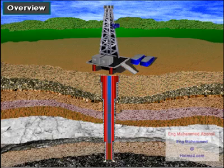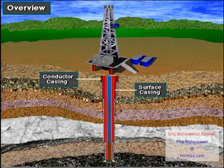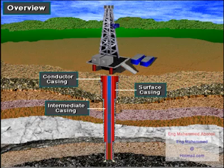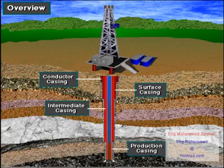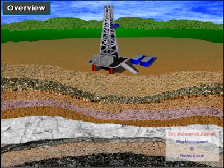By the time the crew drills the well to final depth, it usually has several strings of casing in it. These strings are called conductor casing, surface casing, intermediate casing, and production casing. Notice that the cased well looks something like a telescope pulled out to full length — as the crew drills the well deeper, the size of the hole and the size of the casing gets smaller in diameter.